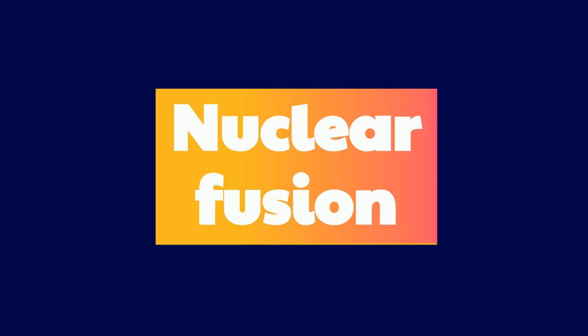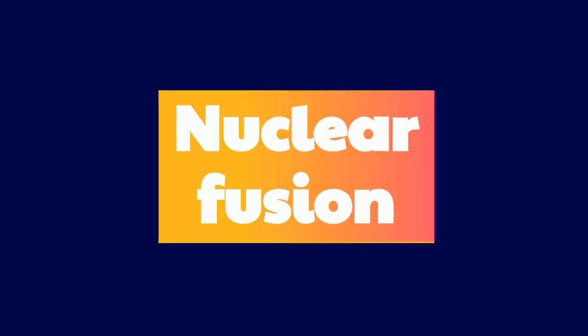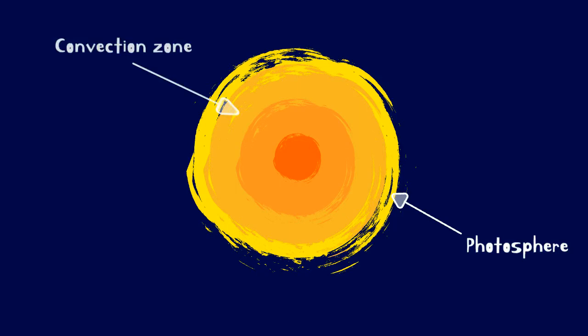They produce a process called nuclear fusion. Before I explain nuclear fusion, you must know the layers of the Sun. They are the photosphere, convection zone, radiation zone, and the core.